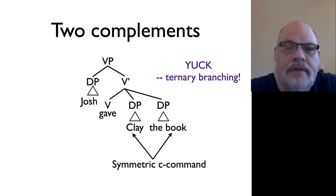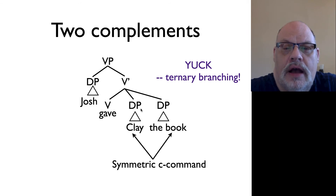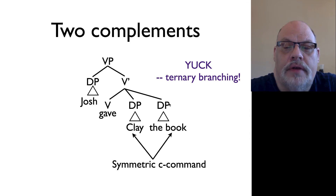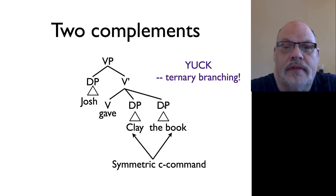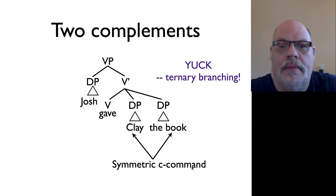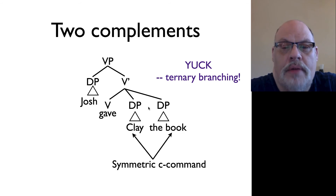If you look at this tree, you'll notice that the two noun phrases C-command each other. C-command is a relationship of motherhood and sisterhood: the DP 'the book' C-commands Clay, and the DP Clay C-commands 'the book.' They are literally sisters, so they symmetrically C-command one another. If we think about phenomena that make reference to C-command, we might be able to see if this is, in fact, a valid representation.